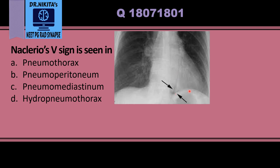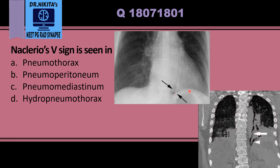If we look at the CT scan, we can see a V-shaped collection. This is the descending aorta, and adjacent to it we see air surrounding the aorta, which means pneumomediastinum. One limb of the V is formed by air adjacent to the descending aorta, and the other limb is formed by air surrounding the medial part of the diaphragm.